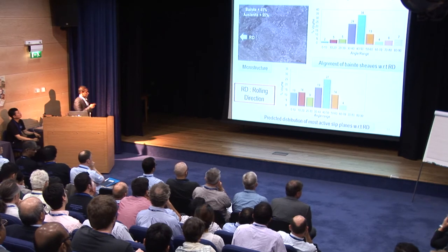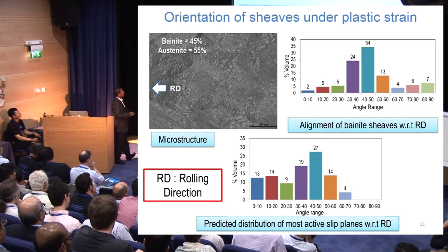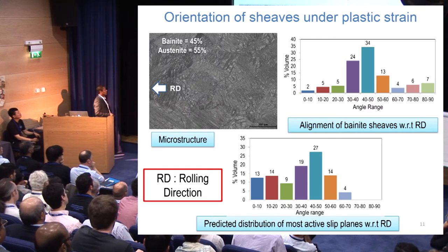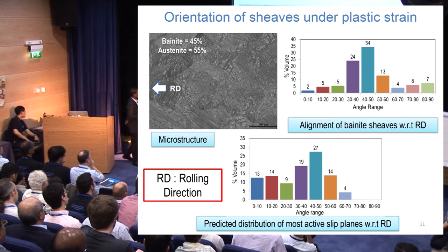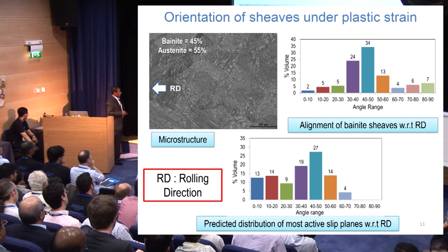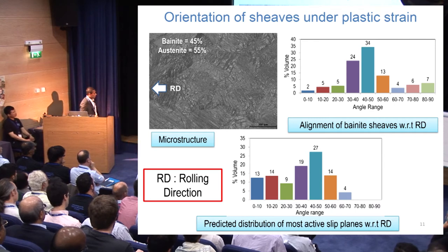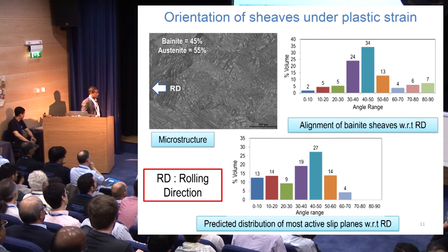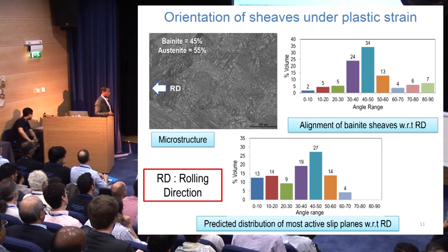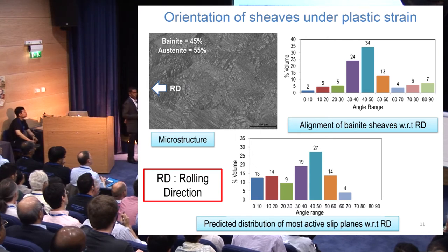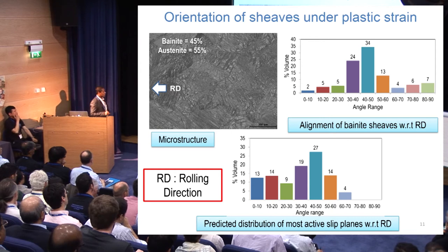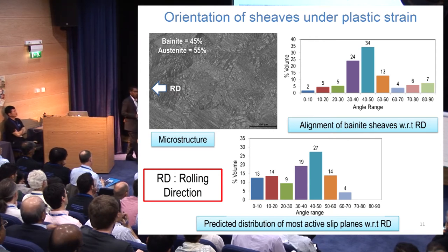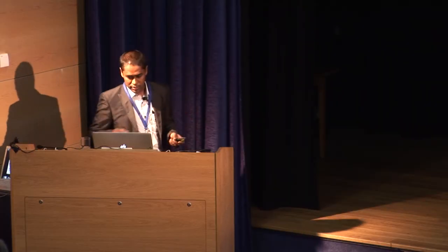When bainite forms under plastic strain, there is a very sharp maximum at 45 degrees in the sheaf distribution, as visible in the microstructure. When we predicted the distribution of most active slip planes, we also obtained a maximum at 45 degrees. This suggests that for bainite forming from deformed austenite, variant selection depends strongly on slip activity, which we have modeled and will see in subsequent slides.